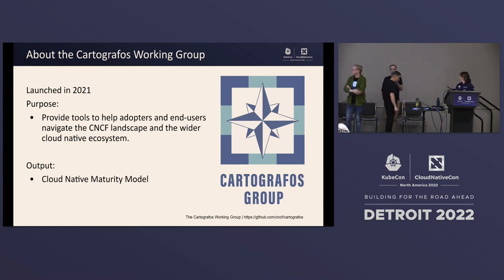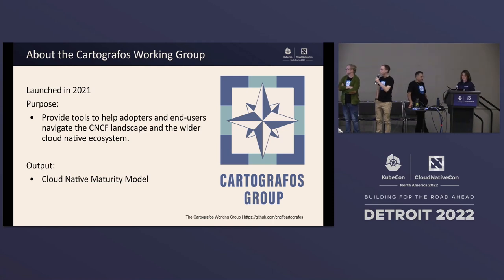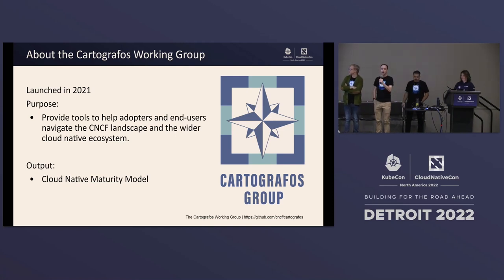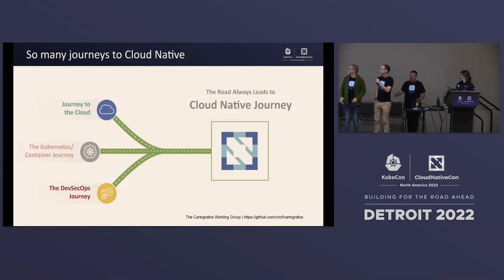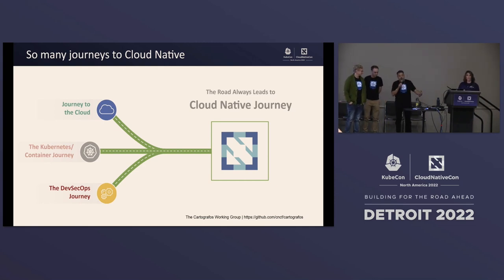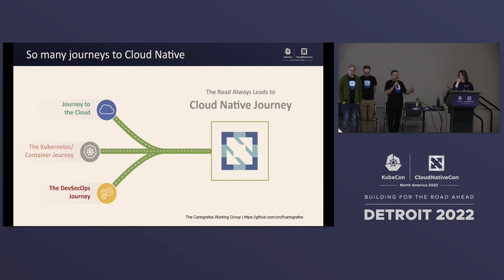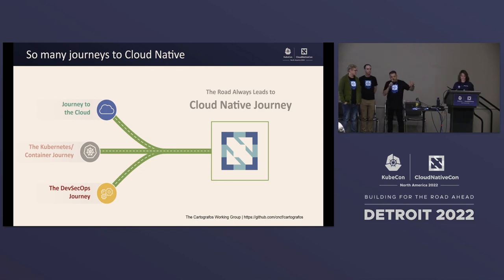The Cartographos Working Group was founded in 2021 and the aim was to help users navigate the cloud native landscape and the wider cloud native ecosystem. So far we've been working on the Cloud Native Maturity Model. Cartographos, by the way, is Greek and it stands for a navigator — every captain, Kubernetes governor, or leader needs a navigator. The project started when all of us had different models we were working on separately, and then together we came together under the CNCF to create what you see today.